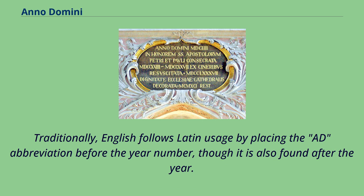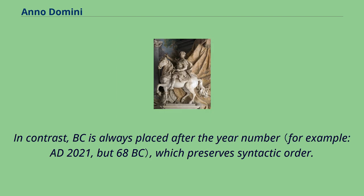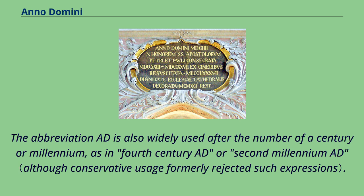Traditionally, English follows Latin usage by placing the AD abbreviation before the year number, though it is also found after the year. In contrast, BC is always placed after the year number, which preserves syntactic order. The abbreviation AD is also widely used after the number of a century or millennium, as in '4th century AD' or '2nd millennium AD.'